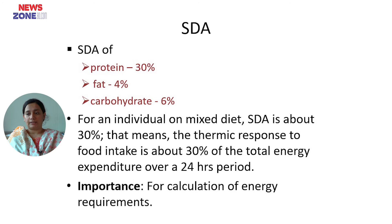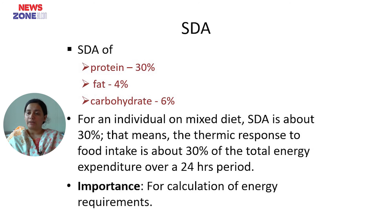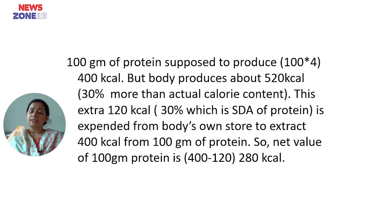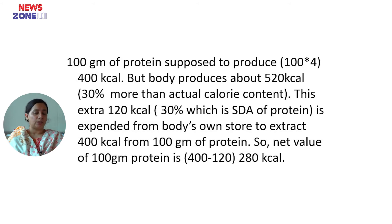For an individual on a mixed diet, the SDA is about 10 to 30 percent. The thermogenic response to food intake is about 30% of total energy expenditure over a 24-hour period. For example, 100 grams of protein is supposed to produce 400 kilocalorie, but the body expends about 520 kilocalorie — 30% more. An extra 120 kilocalorie is used from the body's own stores, so the net value of 100 grams of protein is 280 kilocalorie.